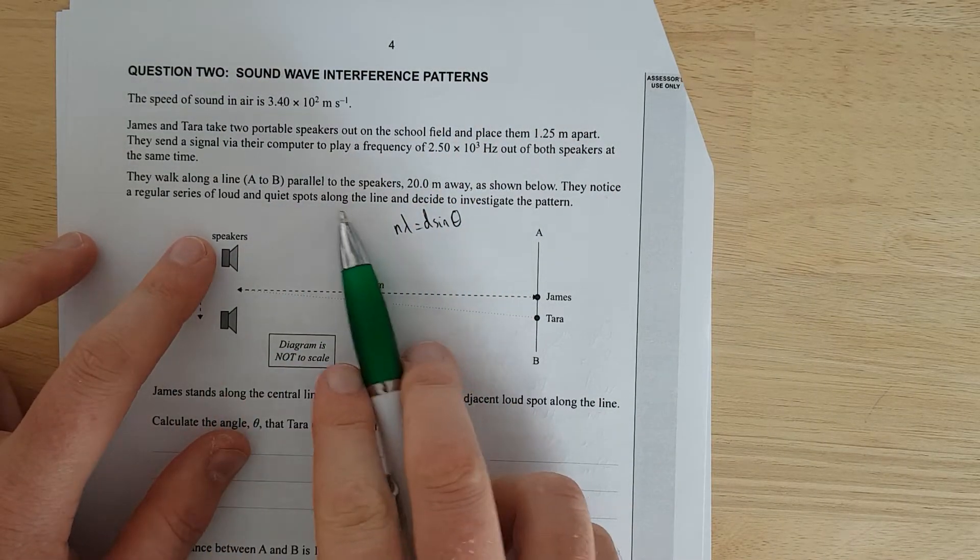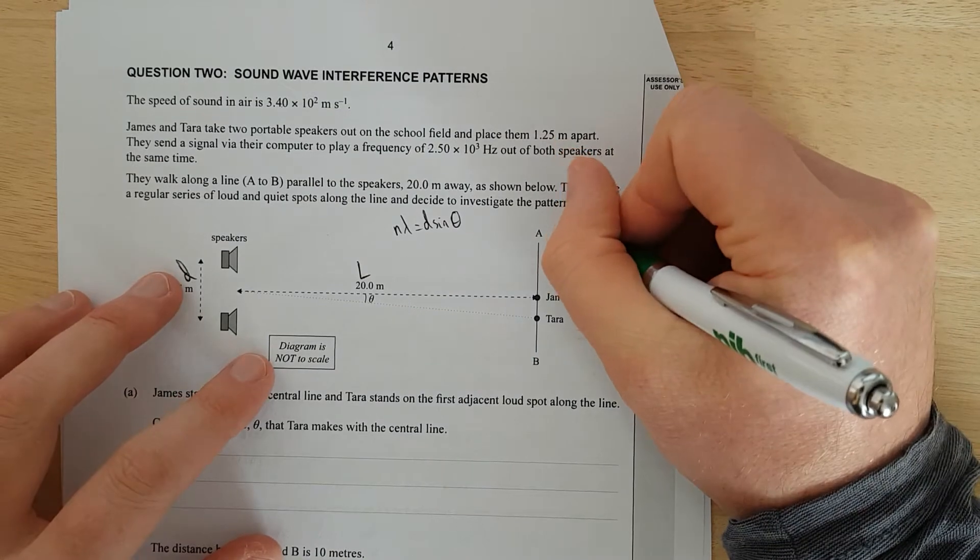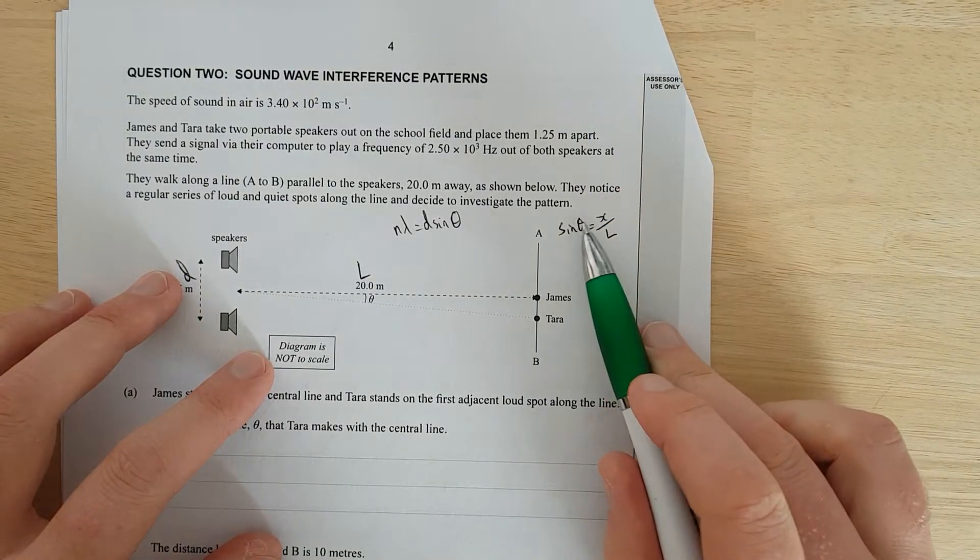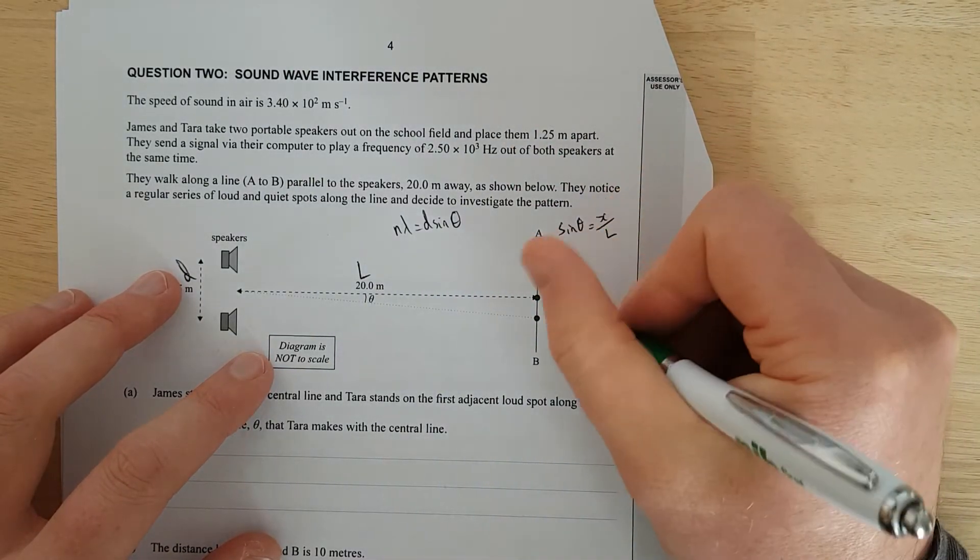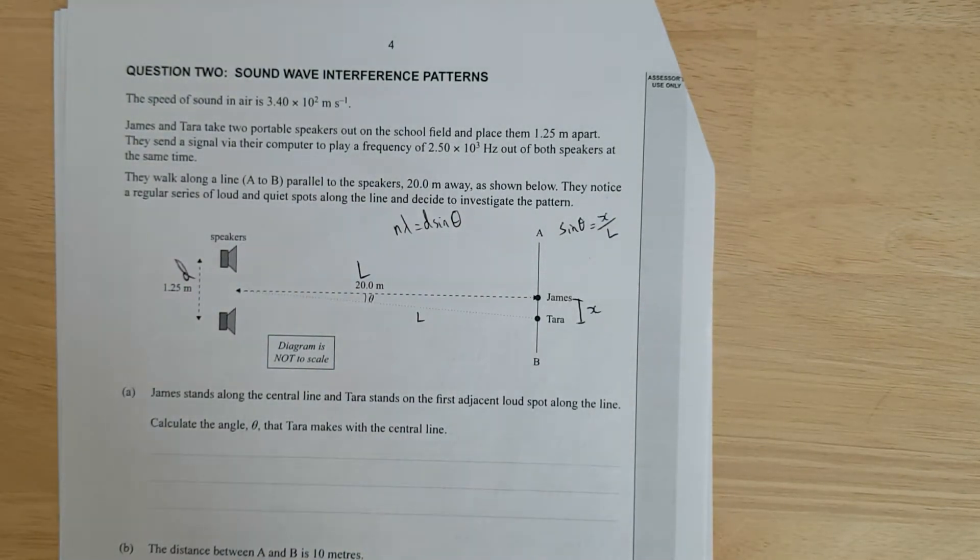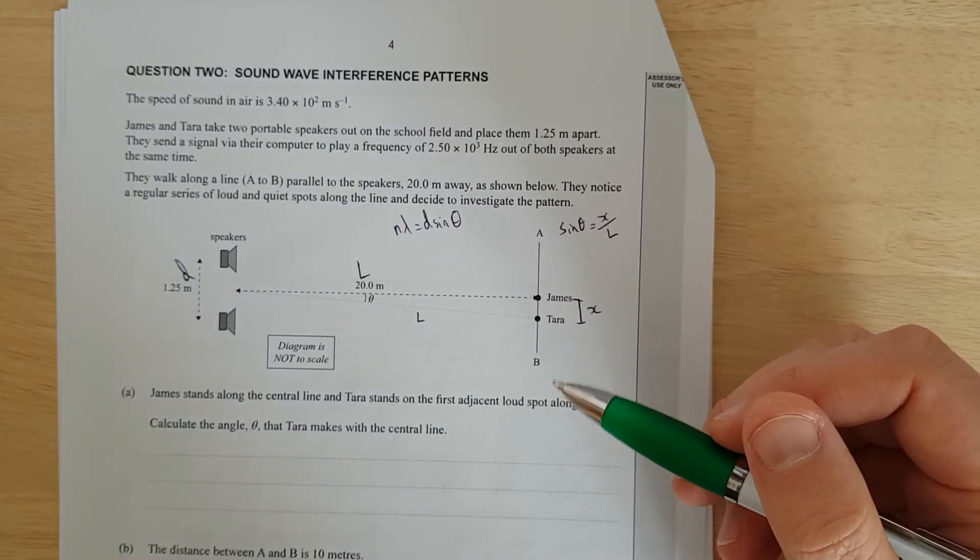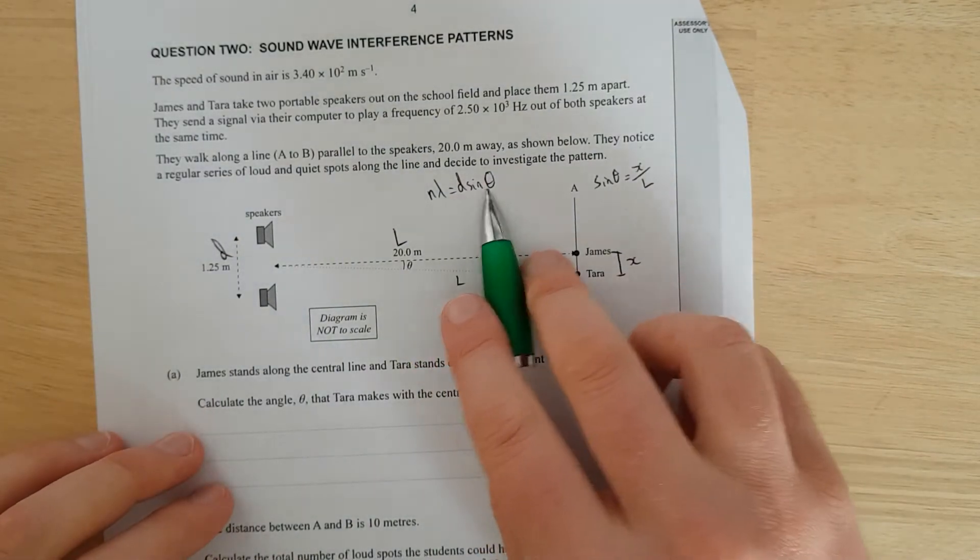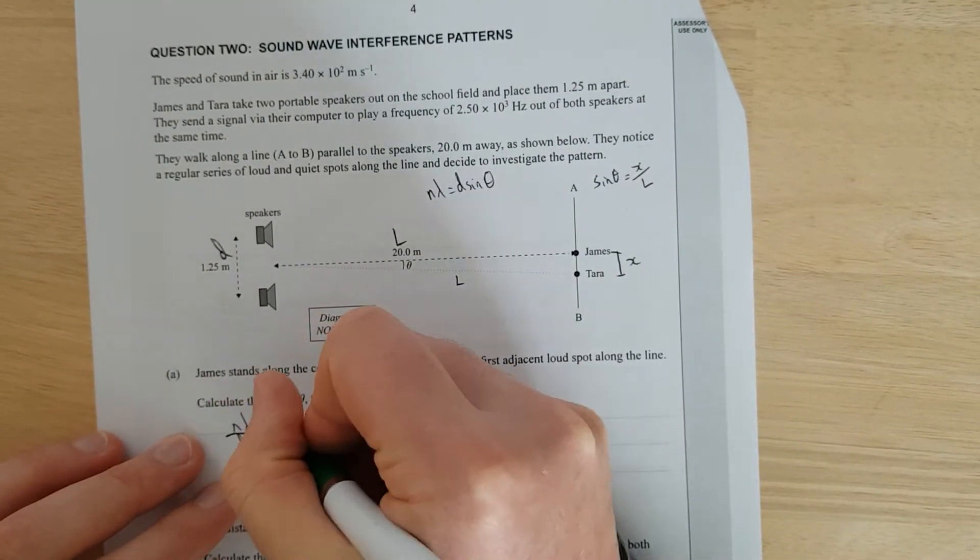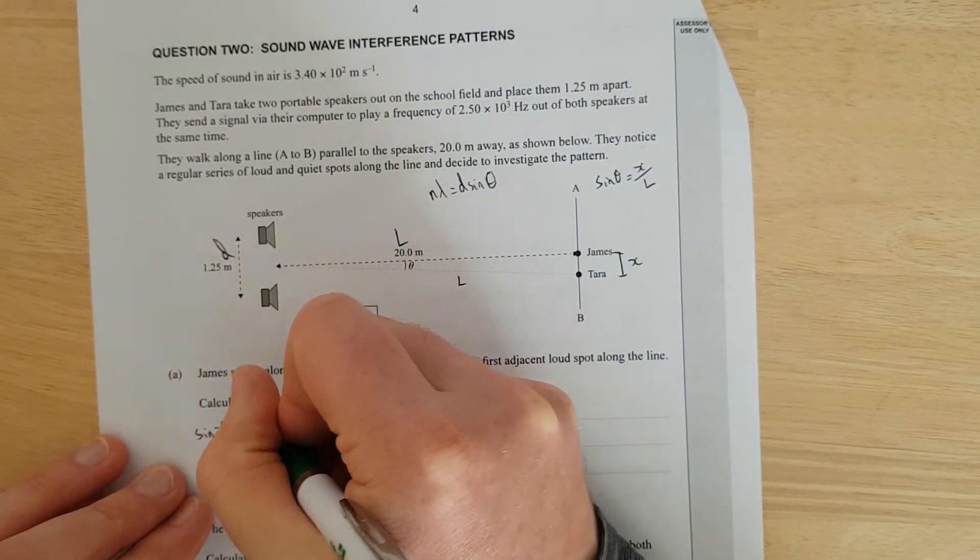N lambda equals D sine theta. They notice a regular series of loud and quiet spots along the line and decide to investigate the pattern. And this formula can also be written with sine theta approximately equal to x over L. Sine is opposite over hypotenuse, opposite being this would be x, in the hypotenuse this would be L. You can look up Khan Academy, the derivation of double-slit interference.